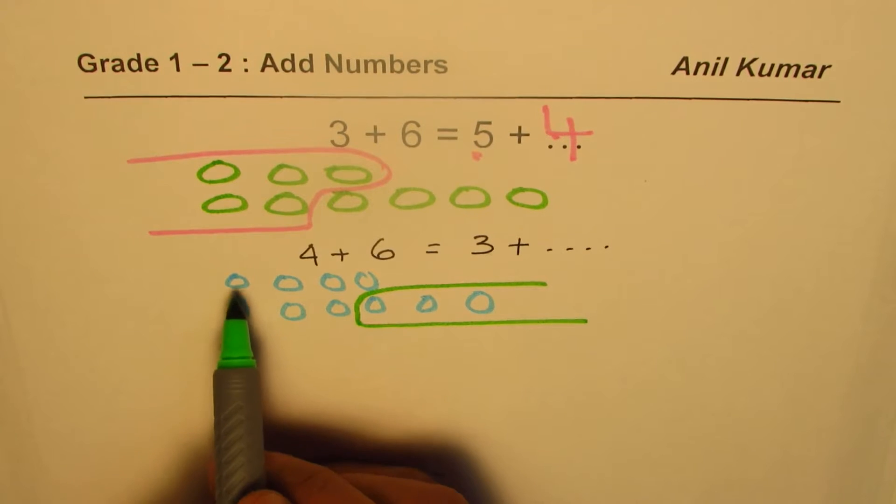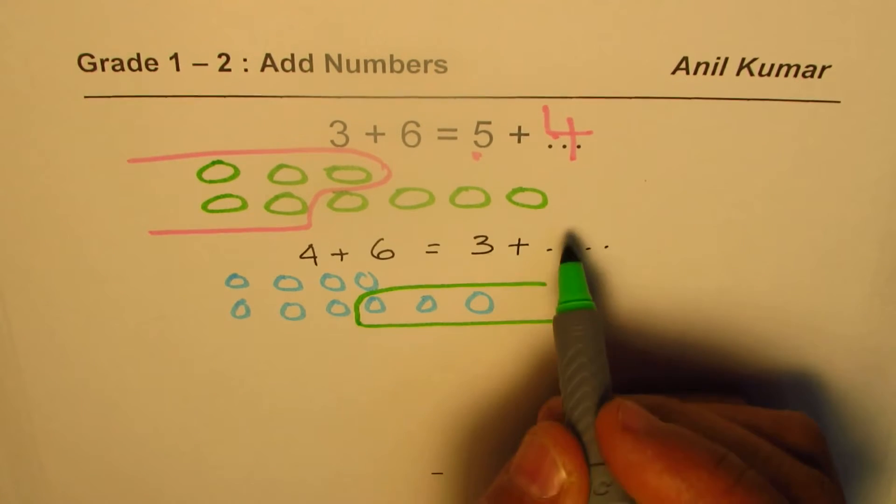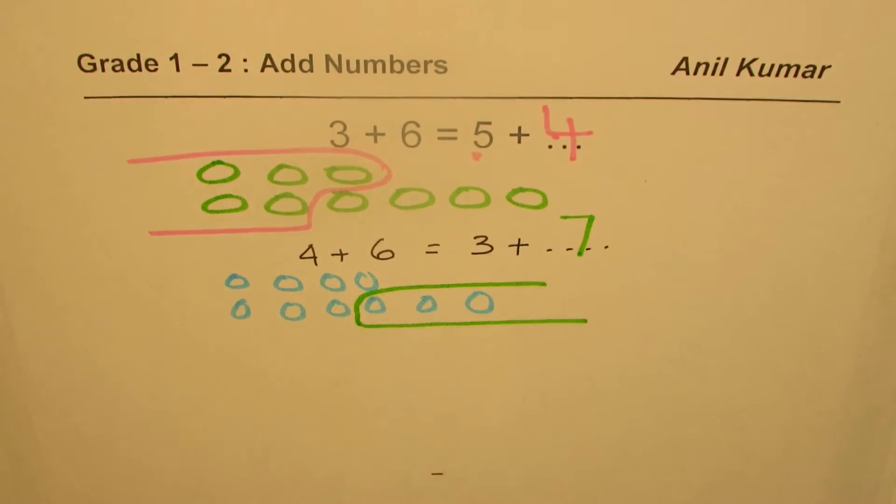What is left? One, two, three, four, five, six, seven. So the number seven comes here. So that is how you can do it.